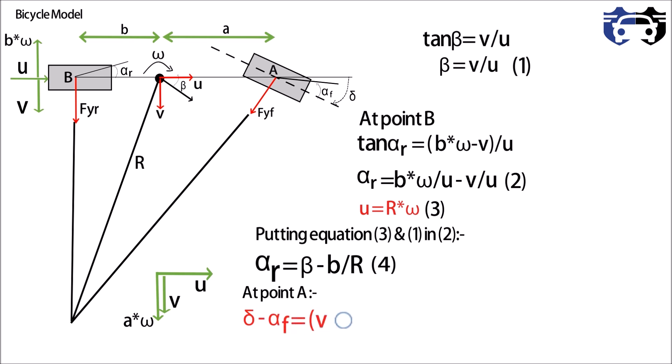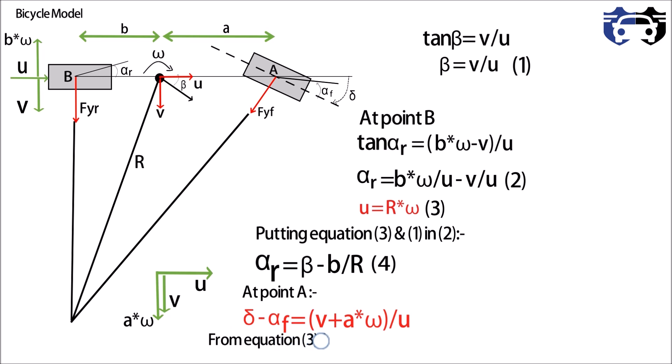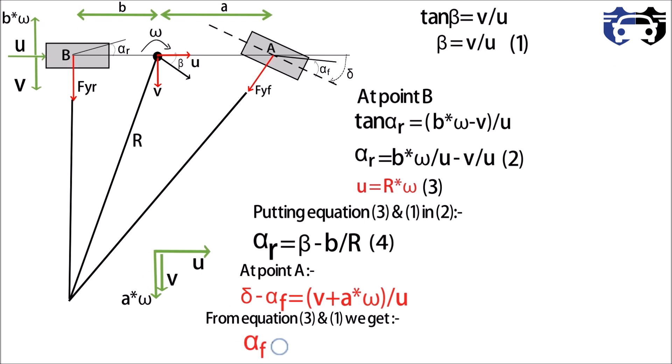Delta minus alpha_f equals to v plus a into omega whole divided by u. From equation three and one we get alpha_f equals to delta minus a by R minus beta. This is our equation five.